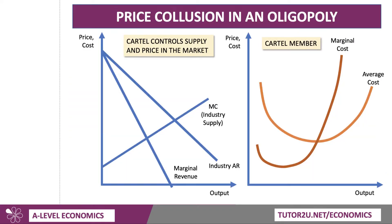Here's the diagram — it's one of the more complex ones, but we'll build it up slide by slide. This is price collusion in an oligopoly. Starting on the left-hand side, we assume the cartel controls the market for a particular product — say cement or olive oil. You have an upward-sloping marginal cost curve, which is effectively the industry's supply curve, and a downward-sloping demand curve, which is the industry's average revenue curve.